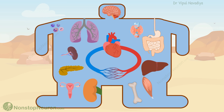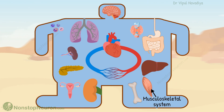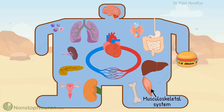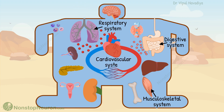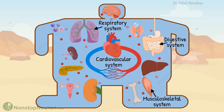Moving back to the role of these organ systems: the musculoskeletal system helps move the entire body to grab food in the external environment. The digestive system takes in this food, digests it, and brings in nutrients like carbohydrates, fatty acids, amino acids, etc., from the external environment into the internal environment. The respiratory system brings in oxygen, and the cardiovascular system stirs the internal environment so that these nutrients reach all the cells inside the body.